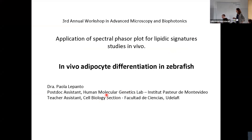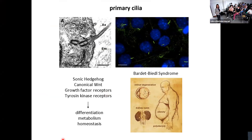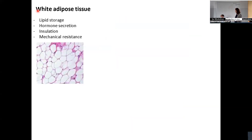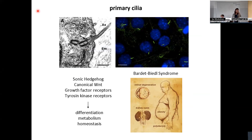I want to give a bit of background on what we're doing in the molecular genetics lab. In our lab we work with primary cilia biology, studying how primary cilia are formed and how they function. Primary cilia are organelles present in almost every cell in the body, hosting a lot of receptors and signaling pathways that influence many processes within cells and organs, such as differentiation, metabolism, and homeostasis.